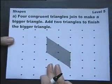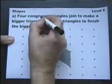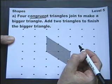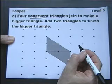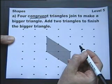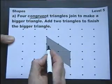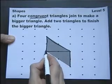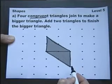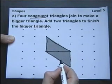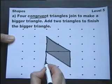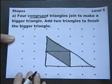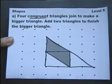A few questions on shapes. Four congruent triangles. So the first thing we need to know is that congruent means exactly the same. Four congruent triangles join to make a bigger triangle. Add two triangles to finish the bigger triangle. So here's two triangles, one, two, and they are exactly the same, they are congruent. I've got to add two more triangles to end up with a large triangle. So I reckon if I stick one there and I stick one there, I don't know if there's another way of doing it but that will do nicely.